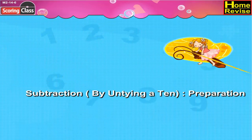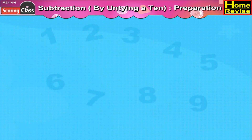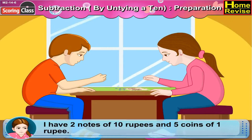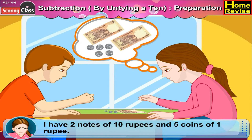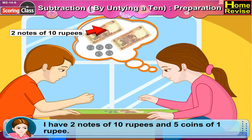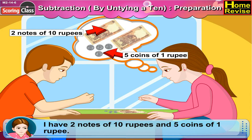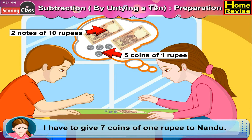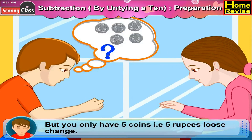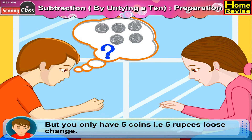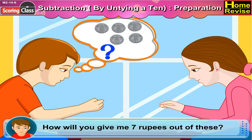Subtraction by untying the ten — preparation. Sonu says, I have two notes of ten rupees and five coins of one rupee. I have to give seven coins of one rupee to Nandu. Nandu replies, but you only have five coins — that is five rupees loose change. How will you give me seven rupees out of these?